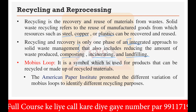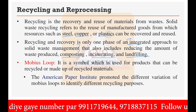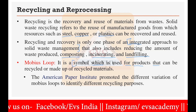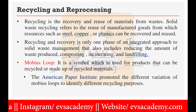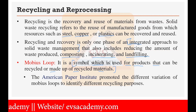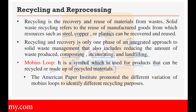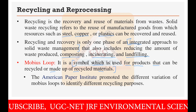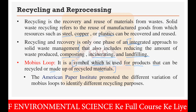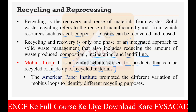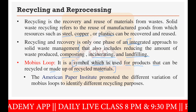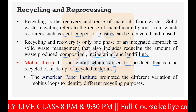Next, we discuss the Mobius Loop. The Mobius Loop is basically a symbol used for products that can be recycled or are made up of recycled material. It denotes either that the material can be recycled or that it is already made from recycled product. You have seen such loops on product labels — especially on papers or notebooks — indicating the material is made from recycled material. Different companies use the same symbol for this purpose.